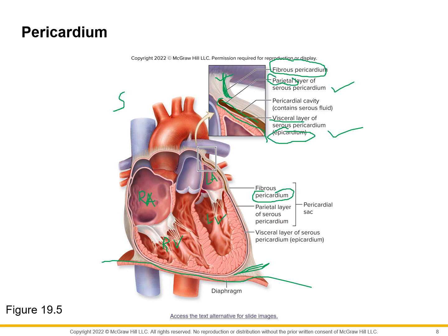The heart has an inverted conical shape with the apex at the bottom. Right away, you can see that the lower left chamber — the left ventricle — has the thickest walls of all four chambers. Structure follows function: from the left ventricle, blood has to be pumped the farthest, which is why there is more muscle around the left ventricle in order to have the most powerful contraction.